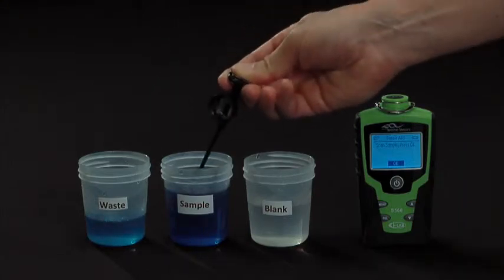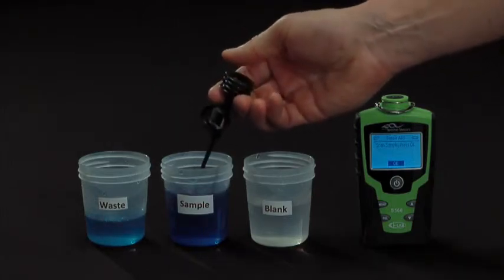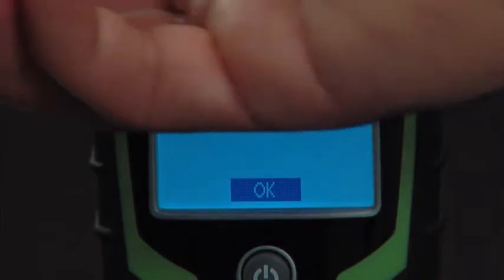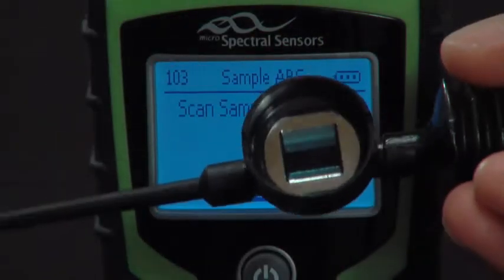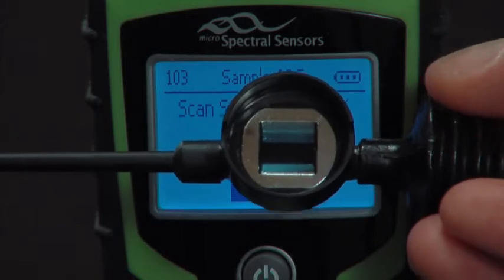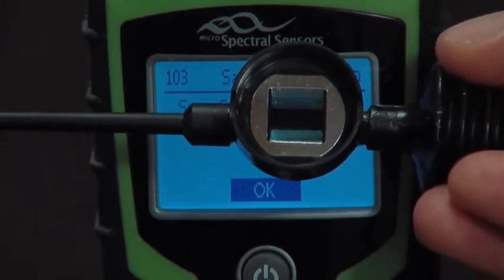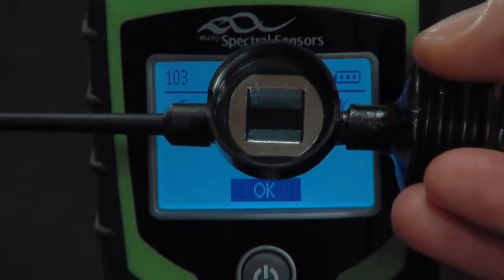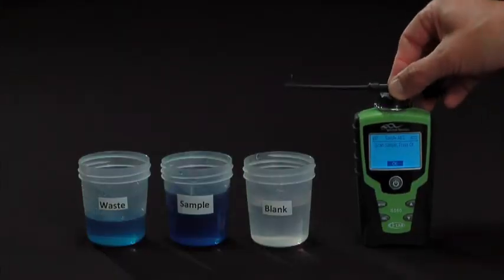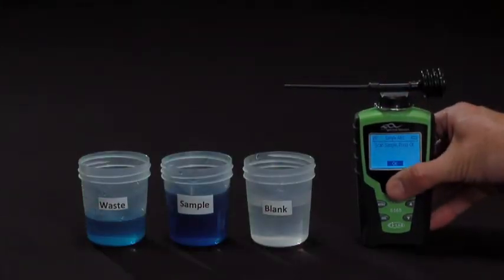We'll then redraw the sample into the Samplet, again using the technique of three-quarters of a bulb press and slowly allowing the sample to draw into the Samplet. We can then look in the chamber and verify that no bubble has formed, then attach the Samplet to the top of the iLab and press the center button to scan the sample.